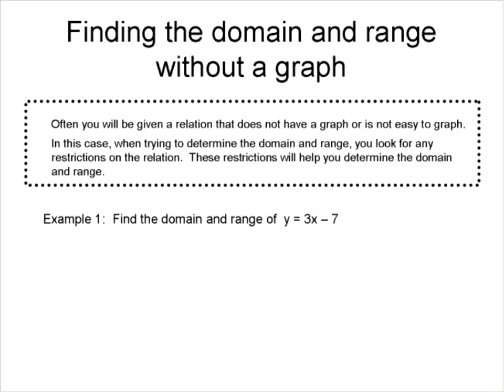Let's look at this first one. This is just a straight line, in the form Y equals MX plus B. So if we're looking at this, is there any value for X that would be restricted? Meaning, is there any value for X that we would put in this function or this relation and we wouldn't get a solution that makes mathematical sense?